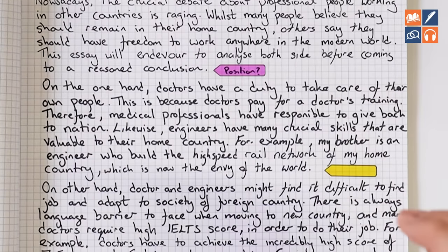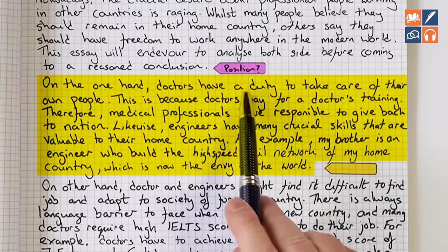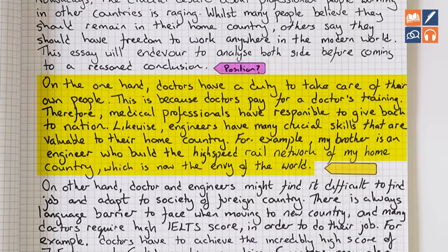Let's move on to the first main body paragraph. 'On the one hand, doctors have a duty to take care of their own people. This is because doctors pay for a doctor's training. Therefore, medical professionals have responsible to give back to nation. Likewise, engineers have many crucial skills that are valuable to their home country.' Overall this is quite good, but there are a couple of major issues. If we look at band 6 for task response, it says main ideas are relevant, but some may be insufficiently developed or lack clarity.